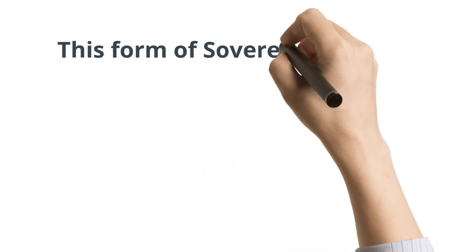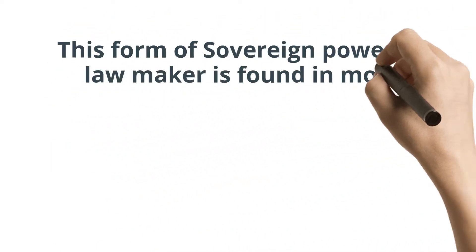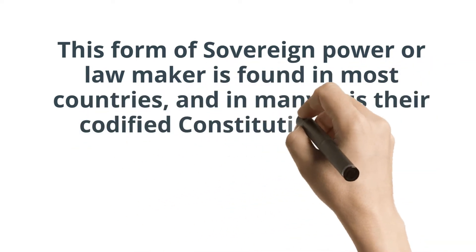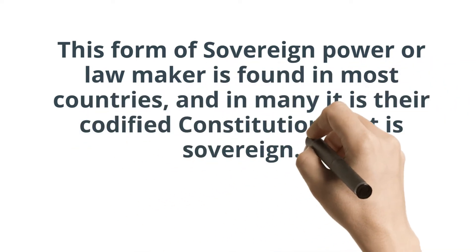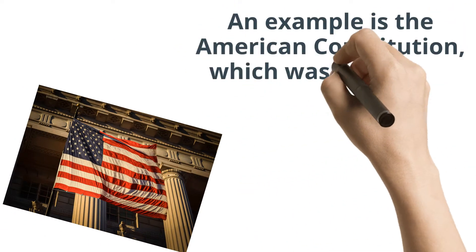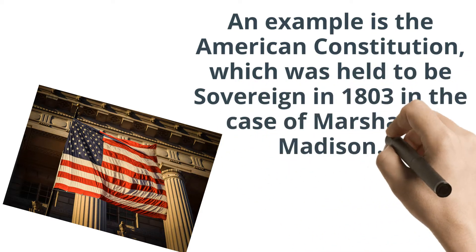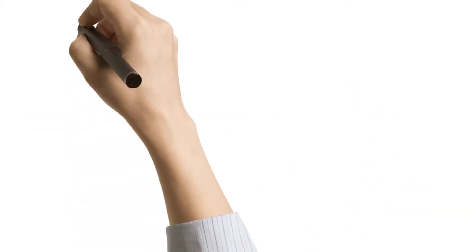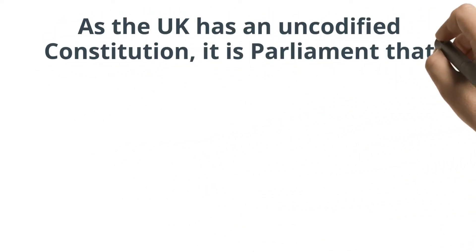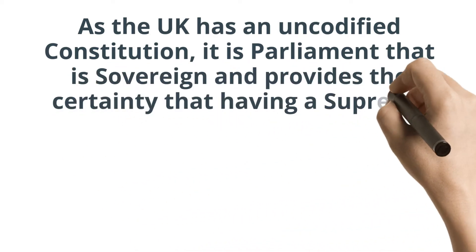This form of sovereign power, or sovereign lawmaker, is found in most countries, and in many countries it is their codified constitution that is sovereign. An example is the American constitution, which was held to be sovereign in 1803 in the case of Marbury v. Madison. As the UK has an uncodified constitution, it is Parliament that is sovereign and provides the certainty that having a supreme form of law provides.